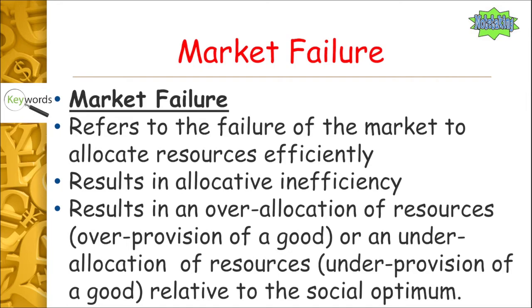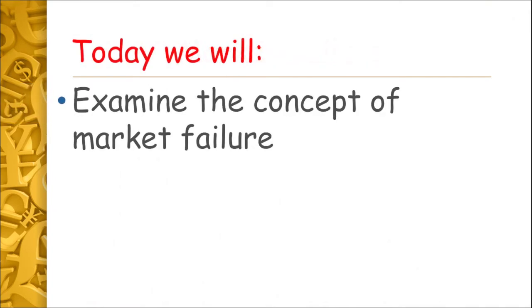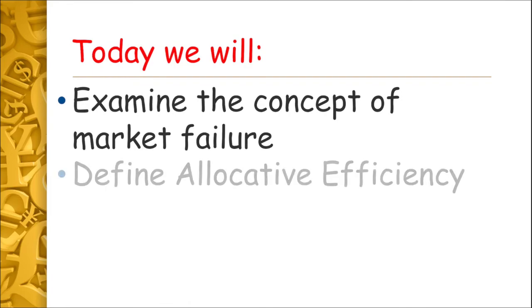So that's an over-allocation of a good — we're making too much of it beyond what the market wants — or an under-allocation of resources, where we're not providing enough resources to that good to create a social optimum. Now we have a general understanding of what market failure is and what allocative efficiency is, and that will lead us into the rest of the videos in this series. I hope you enjoyed this video — if you did, give it a like, and if you want to see more content like this, please subscribe to the channel.